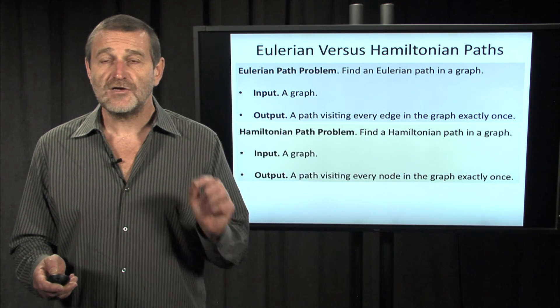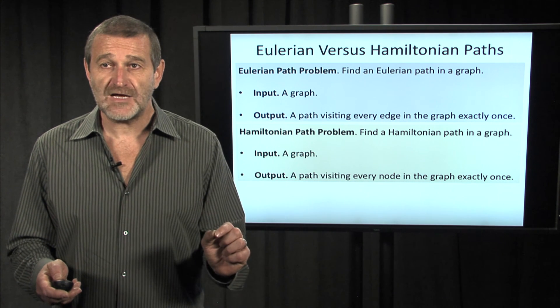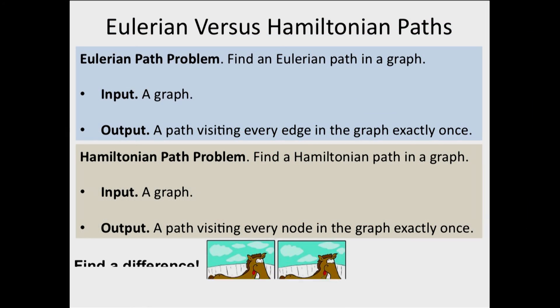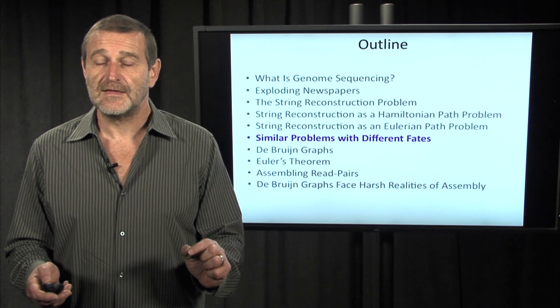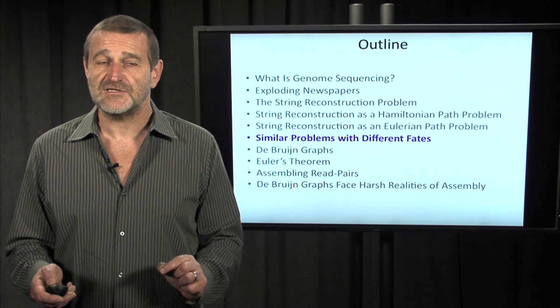So, we now have two problems: Eulerian path problem and Hamiltonian path problem. Do you find many differences here? And the question arises, why did I waste your time reformulating the problem that Sean already presented? What was my goal? And in the next segment, I will give the answer to this question.